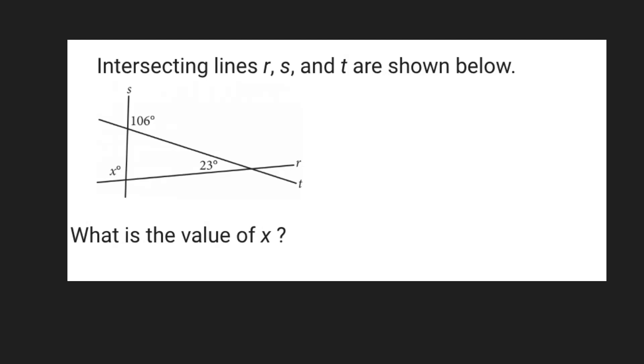So the first thing you want to take note of is supplementary angles, right? Because this 106 degree angle is on this line S, this missing angle here, which actually represents this triangle, that is going to mean that 180 degrees minus 106 degrees is going to be equal to this missing angle.